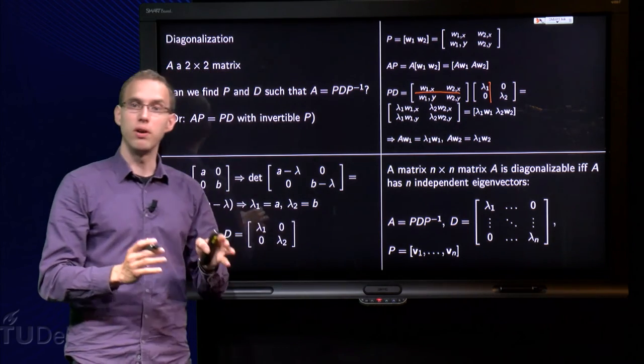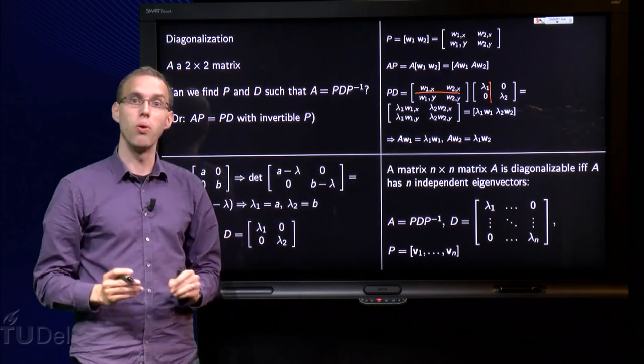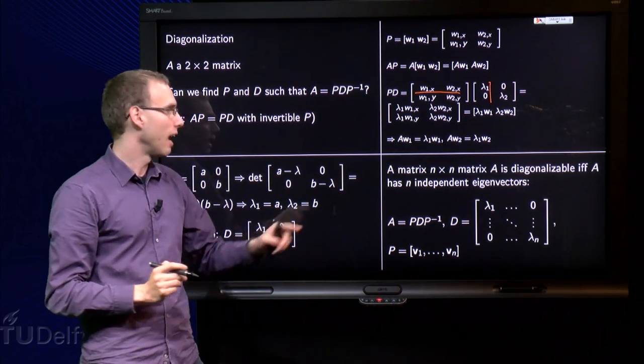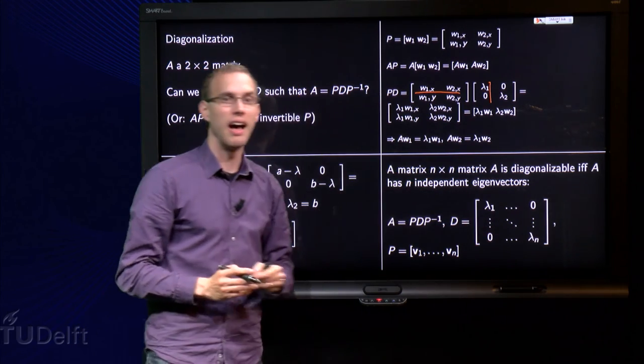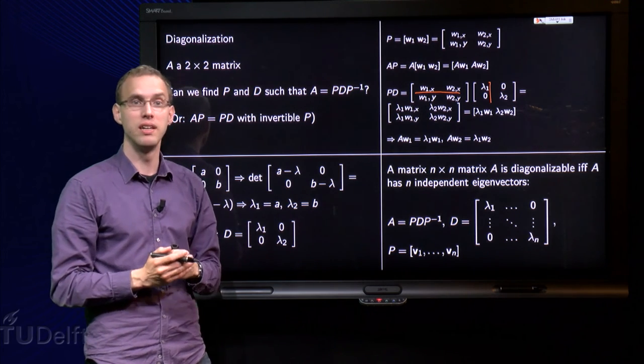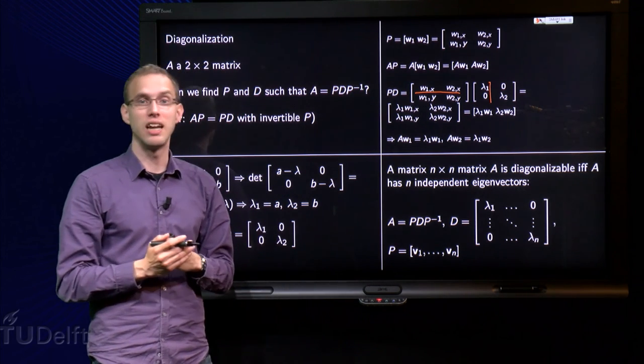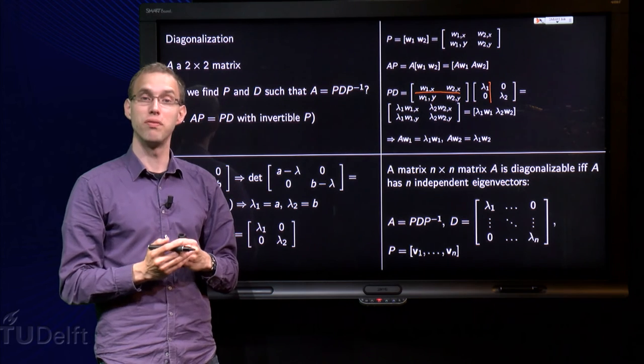How do you form P? Well, you just put the eigenvectors all inside P, and you put the corresponding eigenvalues on the diagonal of D. So that is how you can find a diagonalization of A.